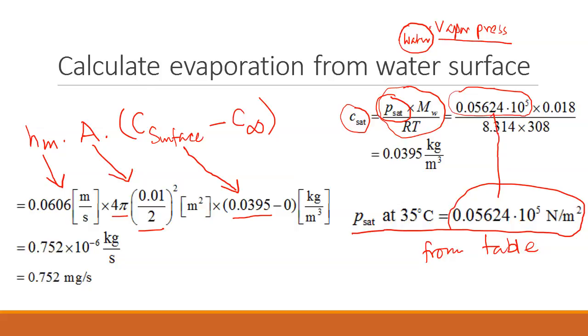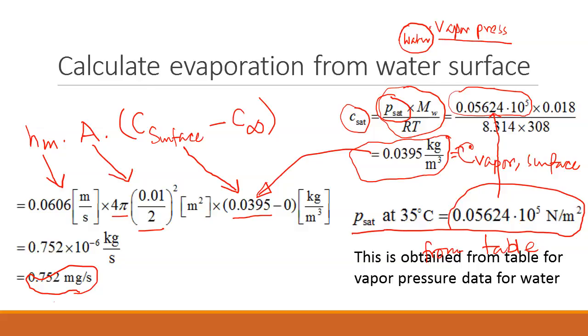So this is from table. So you plug this in, and then you get the concentration of water vapor. So this is equal to C vapor at the surface. So then we plug this guy in here, and that is how we get the total quantity of evaporation. As I said, this is obtained from the table.